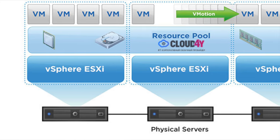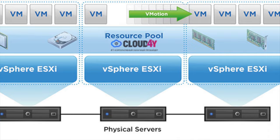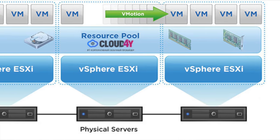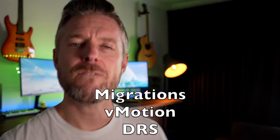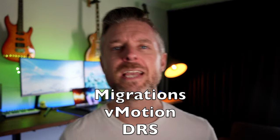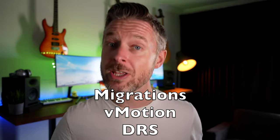Without vCenter, you can't do a whole lot. If you want the benefits of high availability, so that if one host dies the other host can still do its thing, or if you want the ability to move VMs from one host to another, that's where vCenter comes in. In this video we're going to be talking about migrations, vMotion, and DRS, and the differences between each of these in a VMware environment.